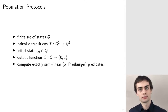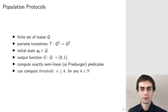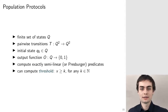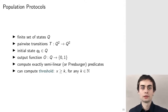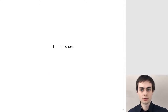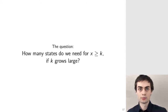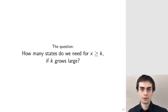It is known that population protocols compute exactly the semi-linear predicates. One of those predicates is the threshold predicate, where the question is whether the initial population of agents has at least size k for a fixed parameter k. The main question of this talk is how many states do we need to decide a given threshold predicate with regards to this parameter k.